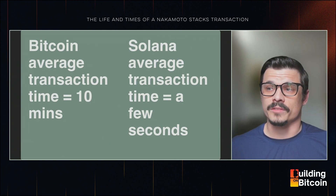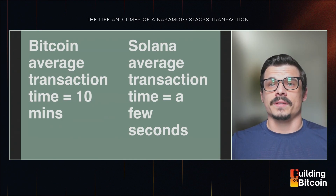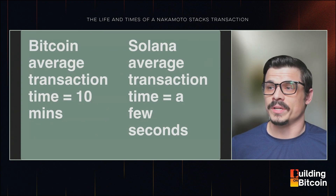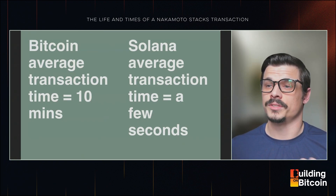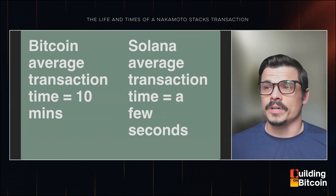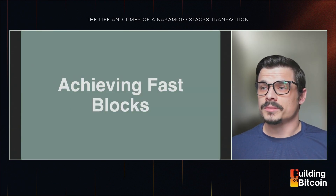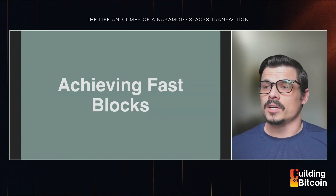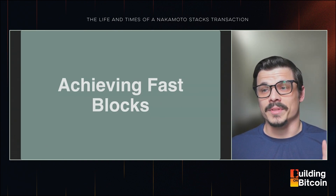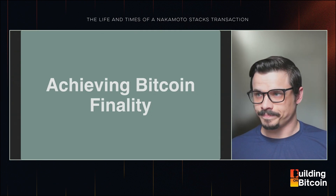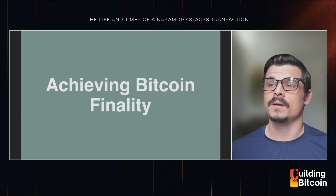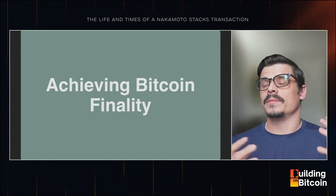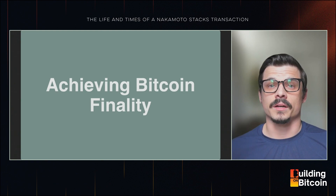The goal with Nakamoto is to get the best of both worlds by using Stacks as a fast L2 on top of Bitcoin with smart contract functionality. We get fast transaction times, expressive smart contract functionality, but we're anchoring to Bitcoin so we still get Bitcoin security. There are really two things we're trying to achieve: fast blocks for good user experience, and Bitcoin finality.